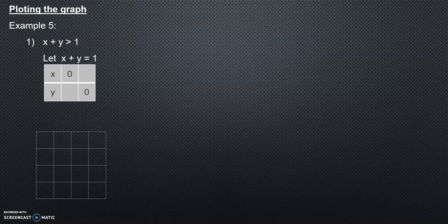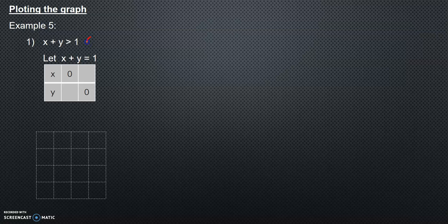In this video, we will learn how to plot the graph. In example five, let's say x plus y is greater than one. First, you can see here it's not included. The graph appears as a dotted line. This is the reminder when we try to plot the graph — our graph appears as a dotted line.